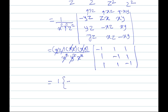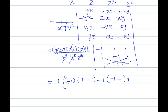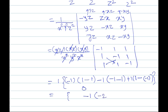Now solving the determinant: expanding along the first row: −1·[(−1)(−1) − (1)(1)] − 1·[(1)(−1) − (1)(1)] + 1·[(1)(1) − (−1)(1)]. This gives −1·(1−1) − 1·(−1−1) + 1·(1+1) = −1·0 − 1·(−2) + 1·2 = 0 + 2 + 2 = 4. The answer is 4.